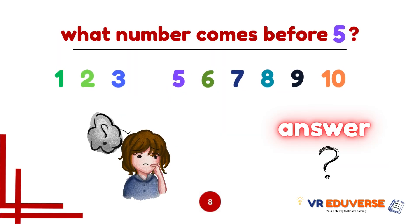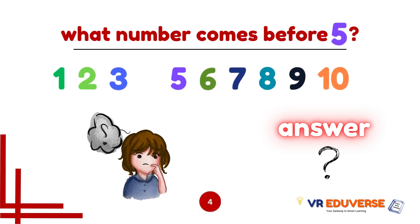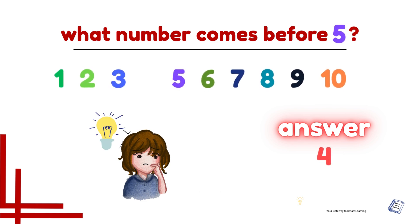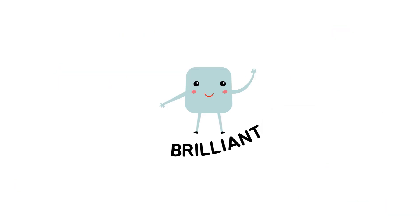What number comes before 5? You got 10 seconds to answer. The answer is 4. That's correct. Brilliant. You are a number champion.